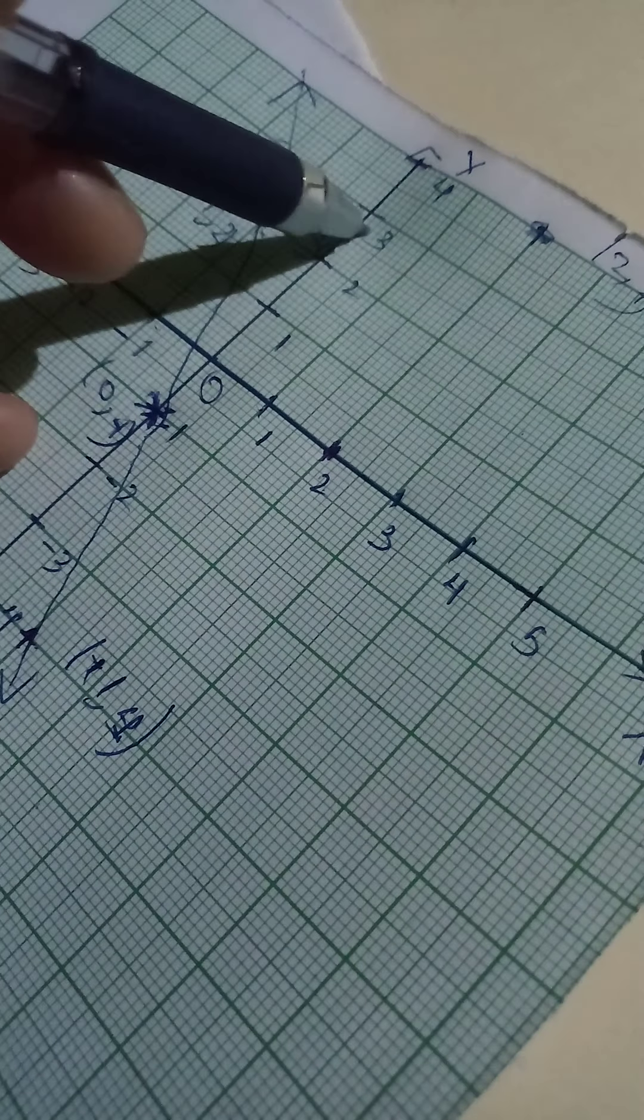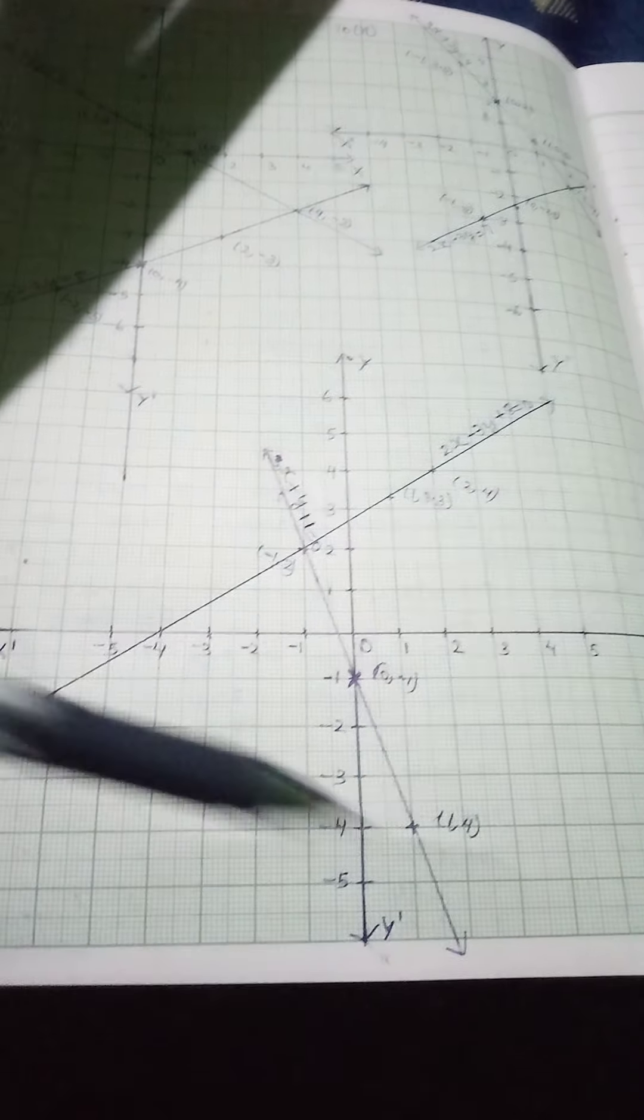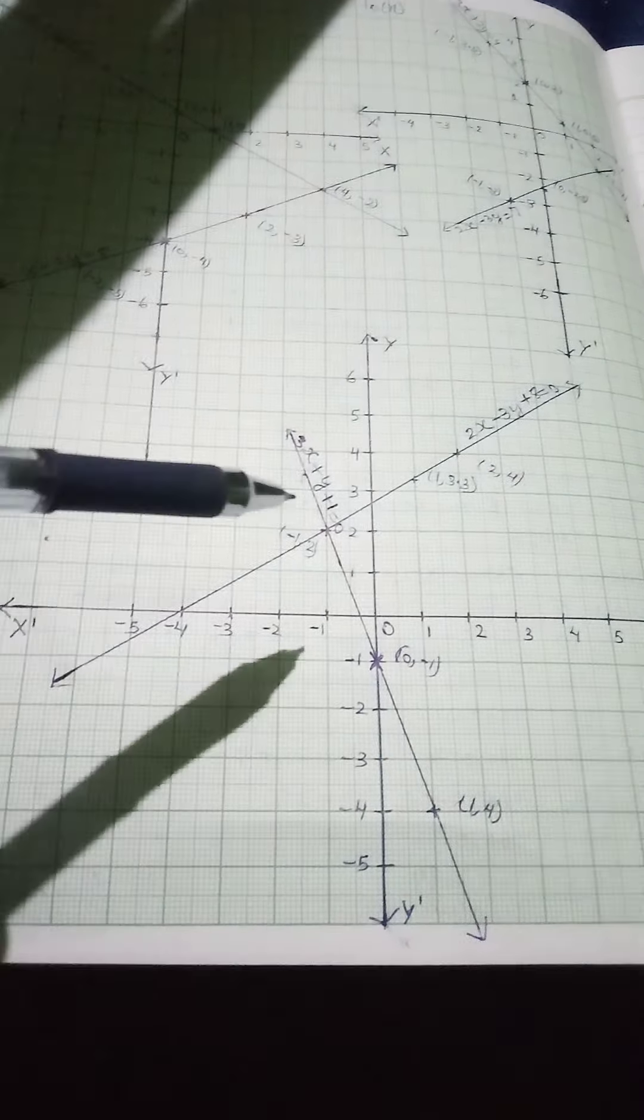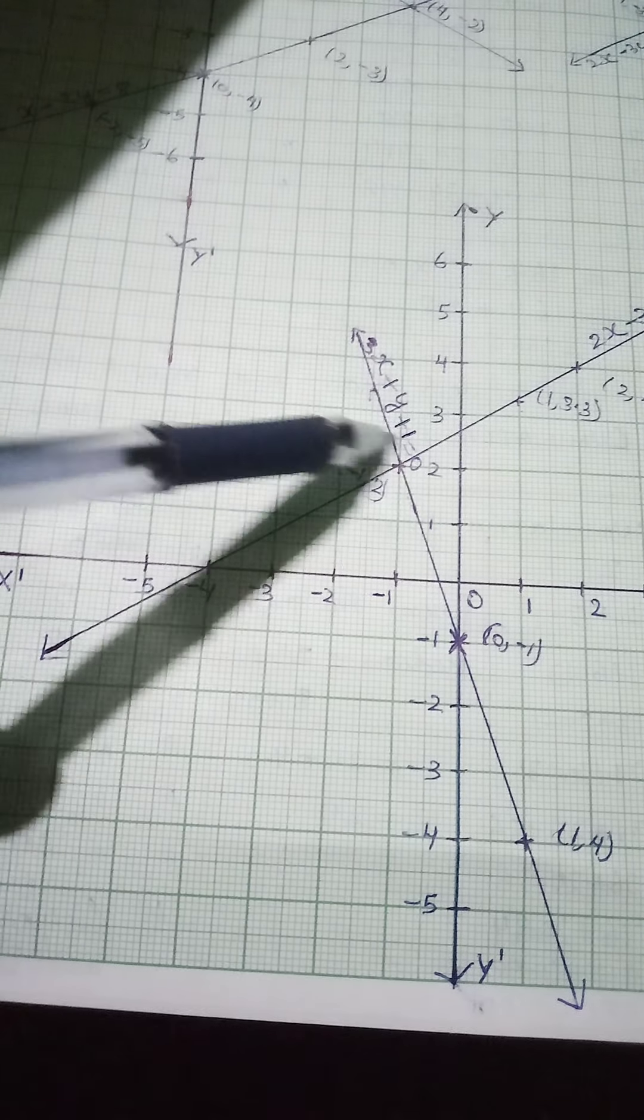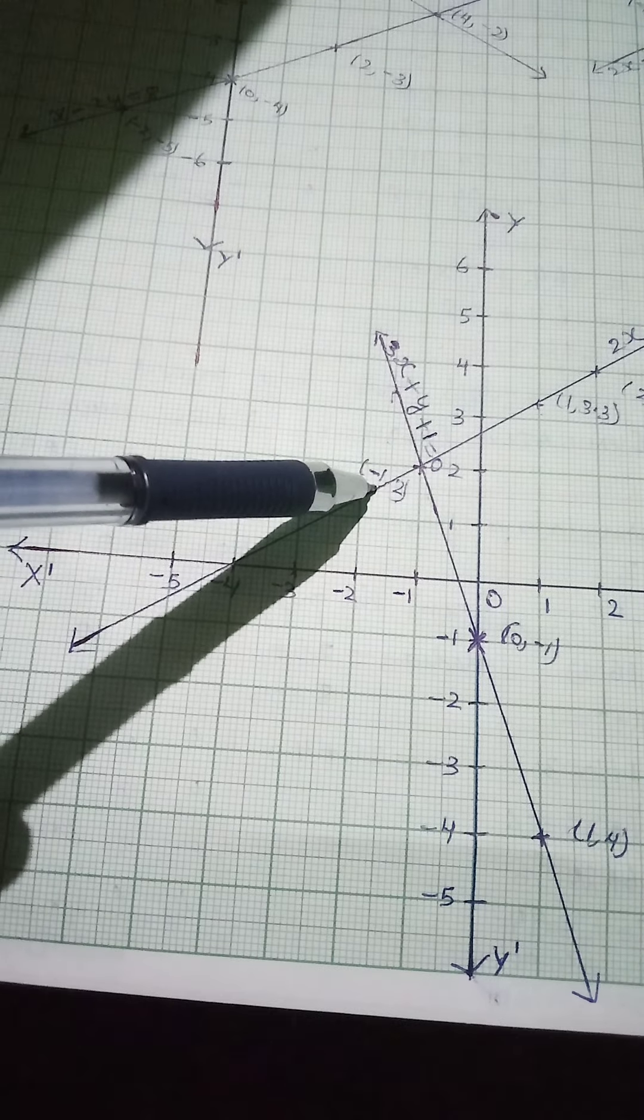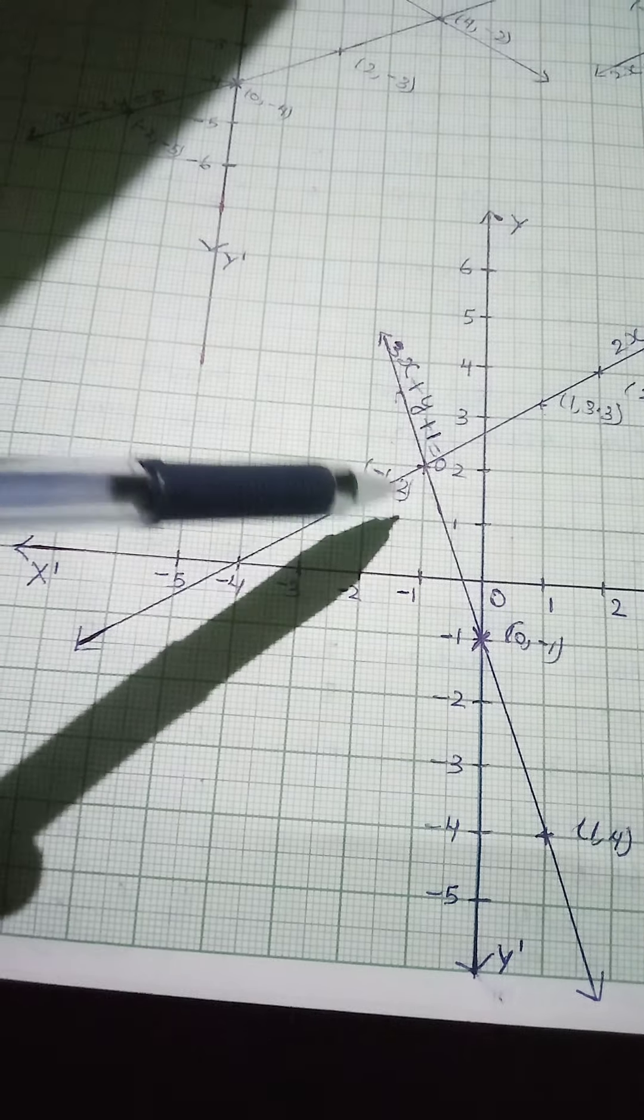So from there you can join using your ruler. So after you join it, more or less you will get it like this. Because our aim is to get the point where they intersect. So the point where those two graphs, both graphs of 1 and 2 intersect is this one. So which mean X is minus 1, Y is 2.